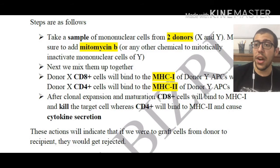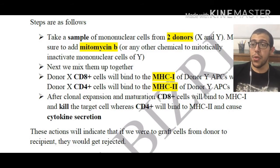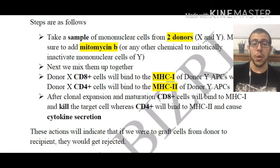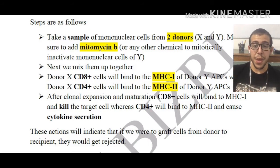So the steps are as follows. We take a sample of the mononuclear cells from two donors, X and Y, and we make sure that for one of these two we are adding chemicals that are going to be preventing the mitosis of these cells.